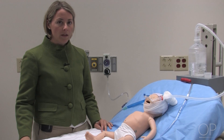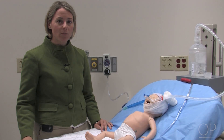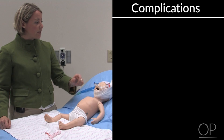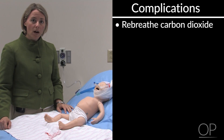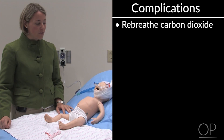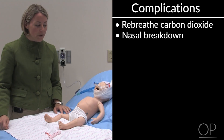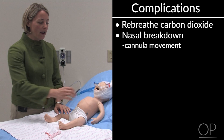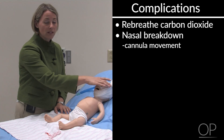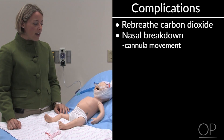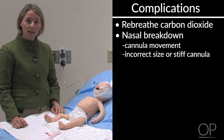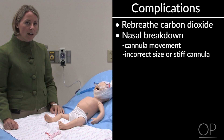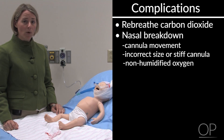Complications. The last thing I'll discuss is some complications you may encounter while a patient is on bubble CPAP. As discussed in the troubleshooting section, if you don't have enough gas flow, you may rebreathe carbon dioxide. You may also develop nasal breakdown from using this system, especially if the cannula is moving frequently — that's why it's very important to secure it to the baby's head. A cannula that is the wrong size, moves around inside the nares, or is very stiff can promote nasal breakdown. Non-humidified oxygen may also be more drying to the nares and promote breakdown, so humidified oxygen is generally safer and more comfortable.